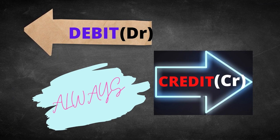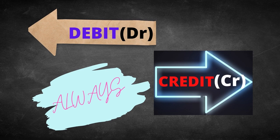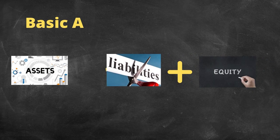Accountants and bookkeepers have used the terms debit and credit for many years to describe where numbers are placed in journals and ledger books. Debit means the left side and credit means the right side — it is always like that. Debit can also be written as DR and credit as CR.